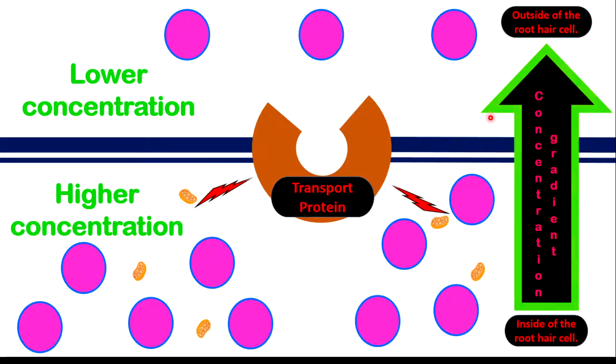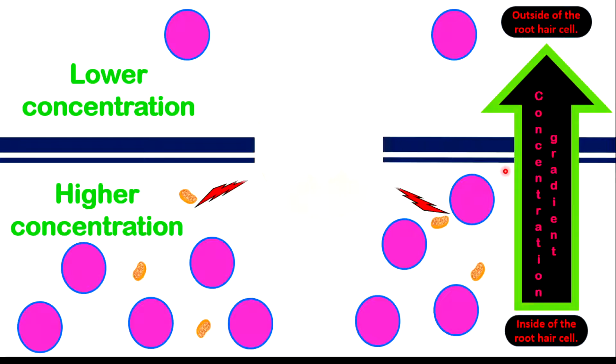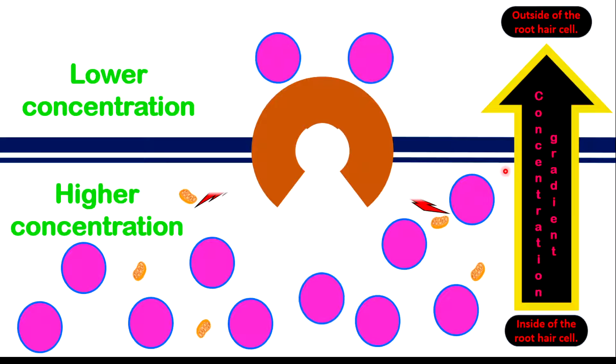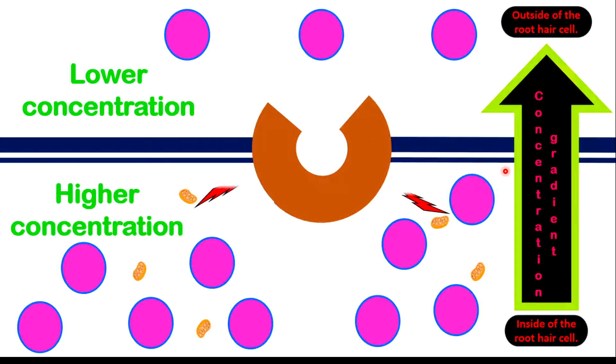Because the particles of the minerals are more on the inside than on the outside, the concentration gradient under normal circumstances would be from the inside of the root hair cell to the outside. However, the minerals will move in the opposite direction, which is termed as moving against the concentration gradient. The minerals will move from the outside towards the inside, aided by these transport proteins.